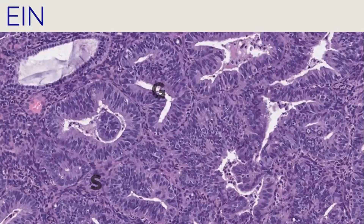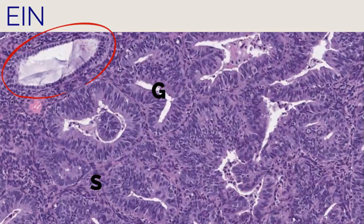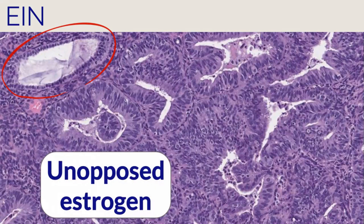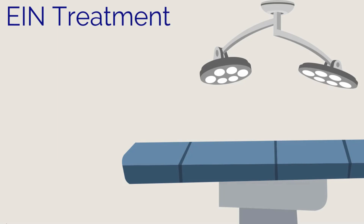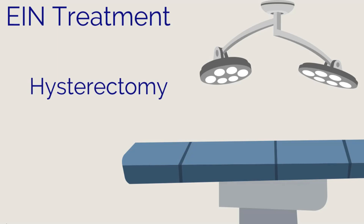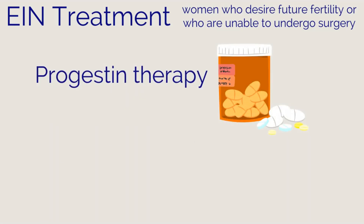How is EIN diagnosed? As seen on this slide, there is a greater than 50% gland-to-stroma ratio resulting in gland crowding. In addition, there is altered cytology of the crowded glands compared to background normal glands, such as an increased nucleus-to-cytoplasm ratio. Look at the differences between the normal background gland circled in red compared to the crowded glands. The pathogenesis of EIN is similar to hyperplasia, implicating unopposed estrogen, with additional evidence for inactivity of tumor suppressor genes. Because of the increased risk of concurrent malignancy and progression, treatment is with total hysterectomy, which assesses for possible concurrent cancer and effectively treats pre-malignant lesions. For women desiring future fertility or unable to undergo surgery, progestin therapy with close follow-up and repeat sampling is recommended.